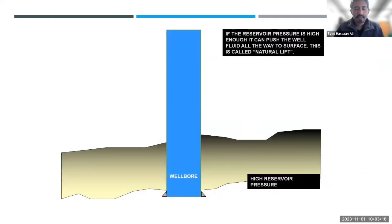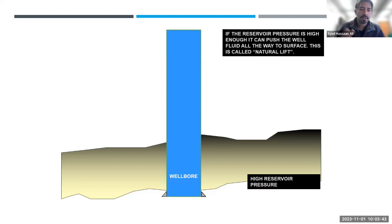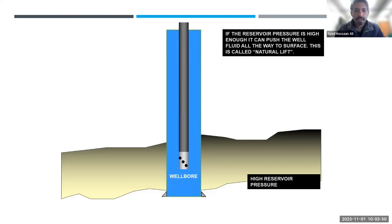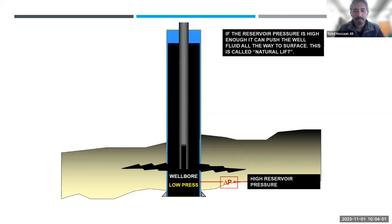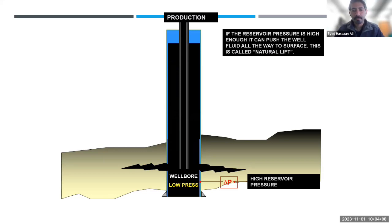So what is artificial lift as a concept? Why do we need it? Whenever we drill an oil and gas well, there are two types of conditions. Either the reservoir pressure is high enough to push the well fluid all the way to the surface — this is what we call natural lift. You drill a well and without any additional system you get the fluid to the surface. Your wellbore pressure is low enough so the differential pressure between the reservoir and the wellbore pushes fluid to the surface, and you get production on the topside.